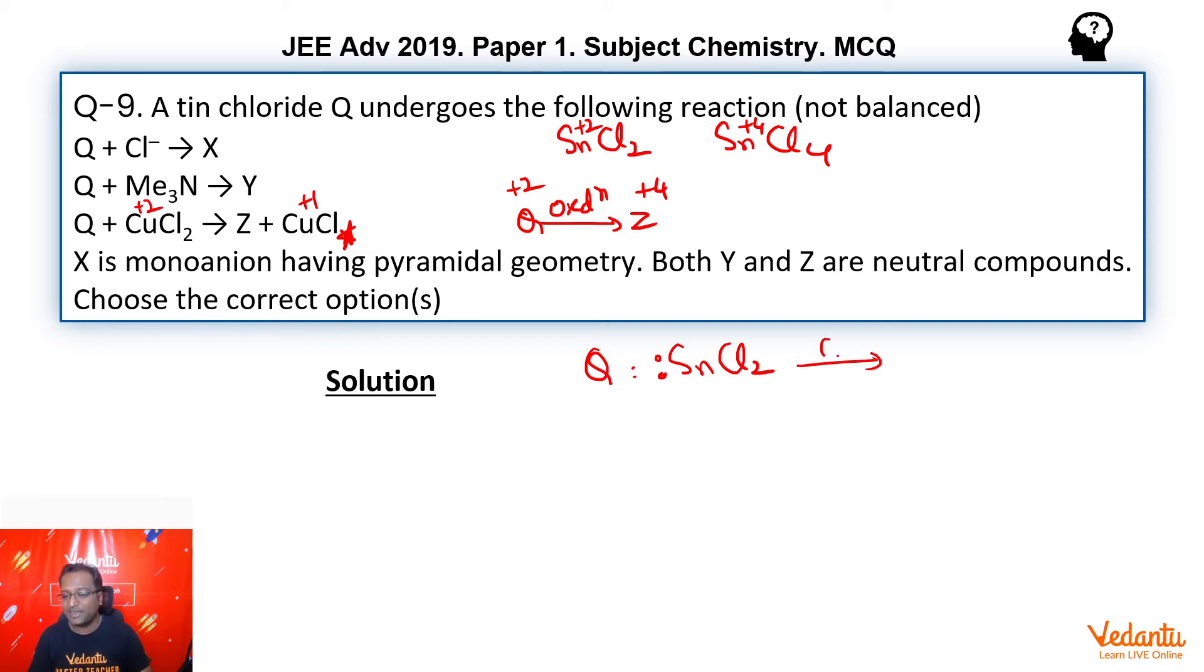Now, SnCl₂ if I react with Cl⁻, what will I get? I will get SnCl₃⁻ with a lone pair. In this, as you can see, tin has 3 chlorines and one lone pair, so its hybridization is sp³. Geometry of orbitals is tetrahedral and the shape here is pyramidal.